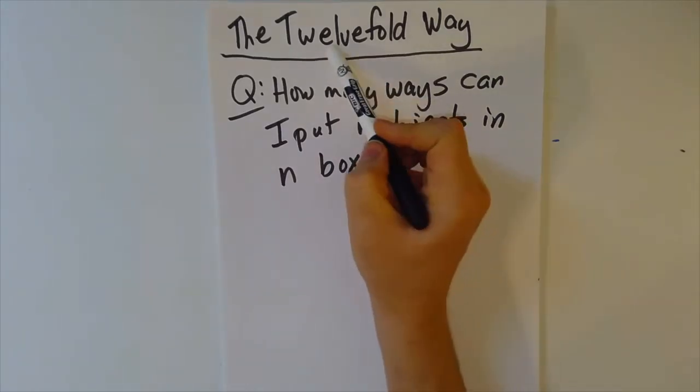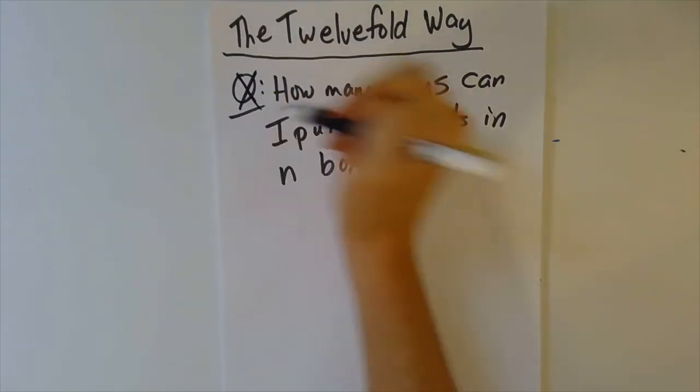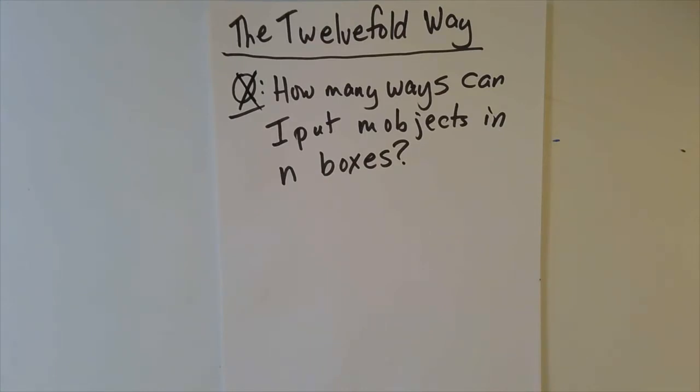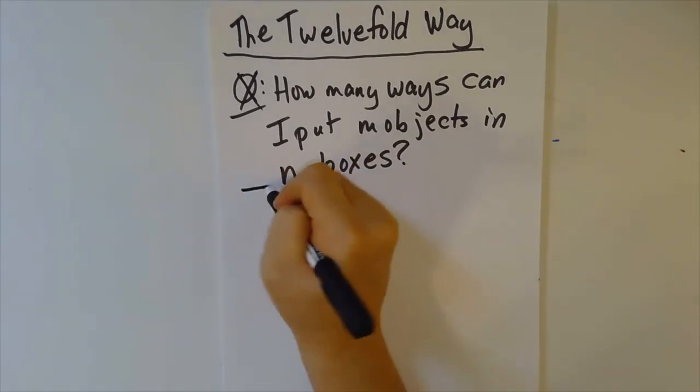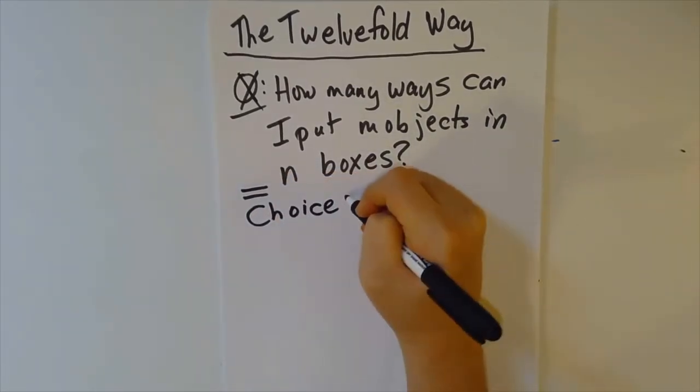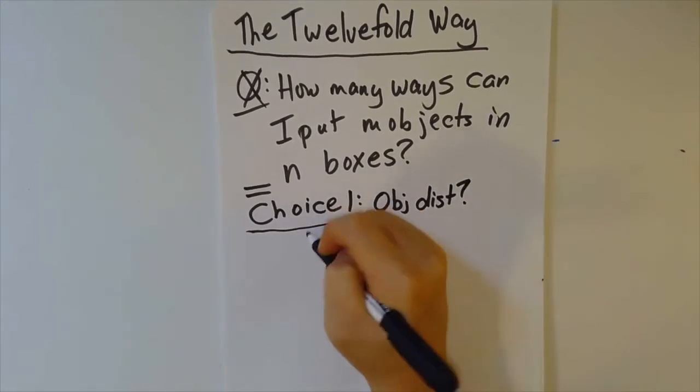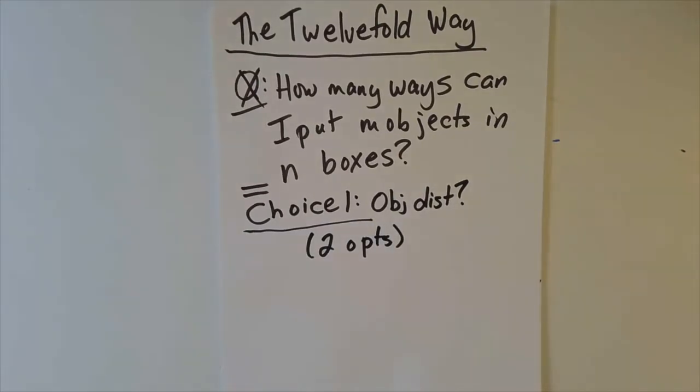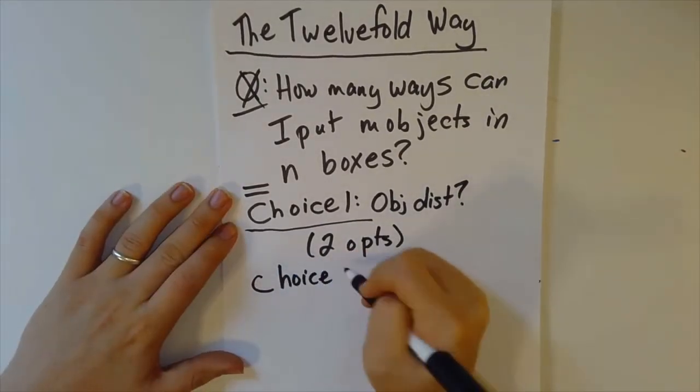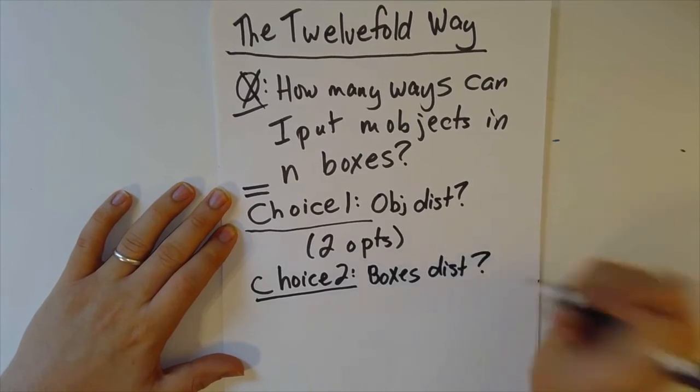So where does this 12 in Twelve-Fold Way come from? It comes from the fact that though this is listed as a question, this isn't really a question until you specify what exactly you mean by it. There's a few different things you might mean by this. We're going to list this as a sequence of choices in our usual sense. Choice one is going to be, are the objects themselves distinguishable or not? That will give us two options. Choice two is going to be, are the boxes distinguishable or not? That will be two options.